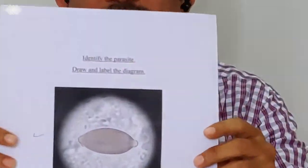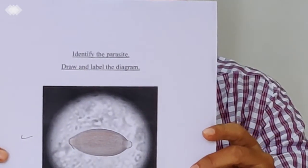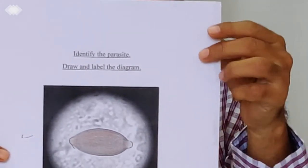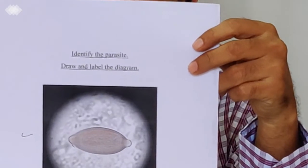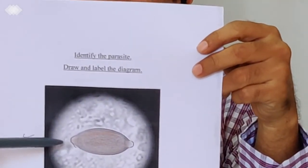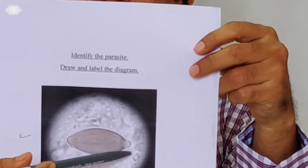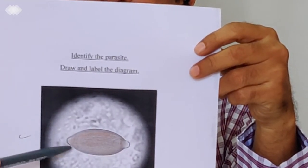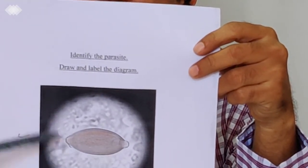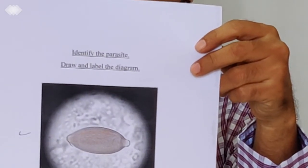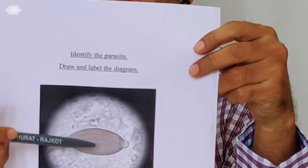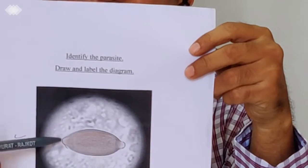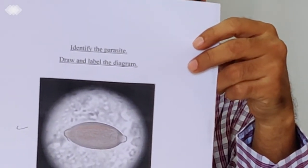The next egg, which is again bile-stained, this is known as egg of Trichuris trichiura. The unique feature of this egg is, you can see that there would be at both the ends, there would be polar mucus plugs. So, that is a characteristic barrel-shaped egg with these two mucus plugs, that is Trichuris trichiura.